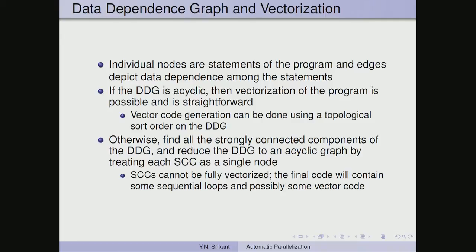Having seen examples of data dependence relations and direction vectors, it is now time to understand how to use dependences for vectorization and concurrentization. Individual nodes are statements and edges depict data dependences. If the DDG is acyclic, vectorization is straightforward. The key condition for vectorization is that the data dependence diagram should be acyclic. Vector code generation can be done using a topological sort on the data dependence graph.